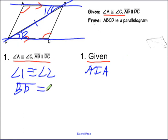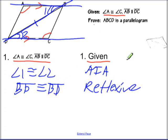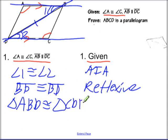I could then get BD congruent to itself by reflexive. And now I've got the two triangles congruent. So I could say that triangle ABD is congruent to triangle CDB, and that's angle angle side. I've got two angles and a side.